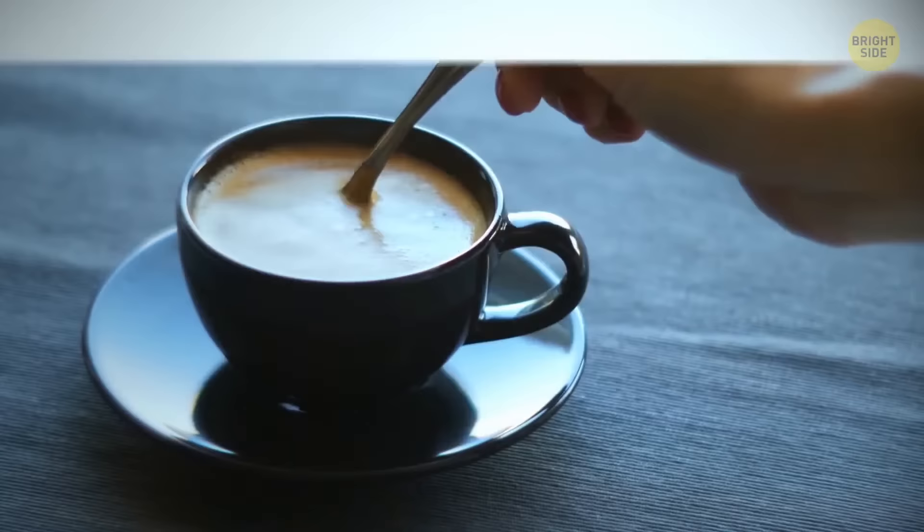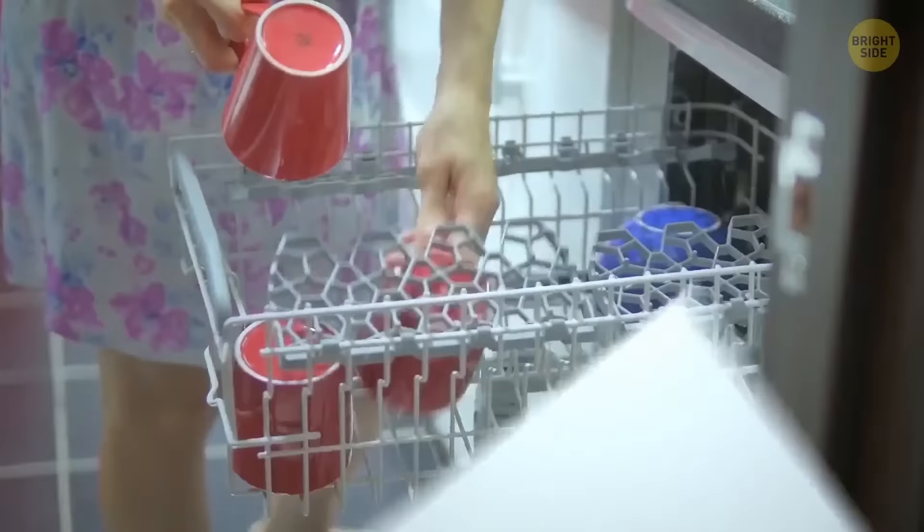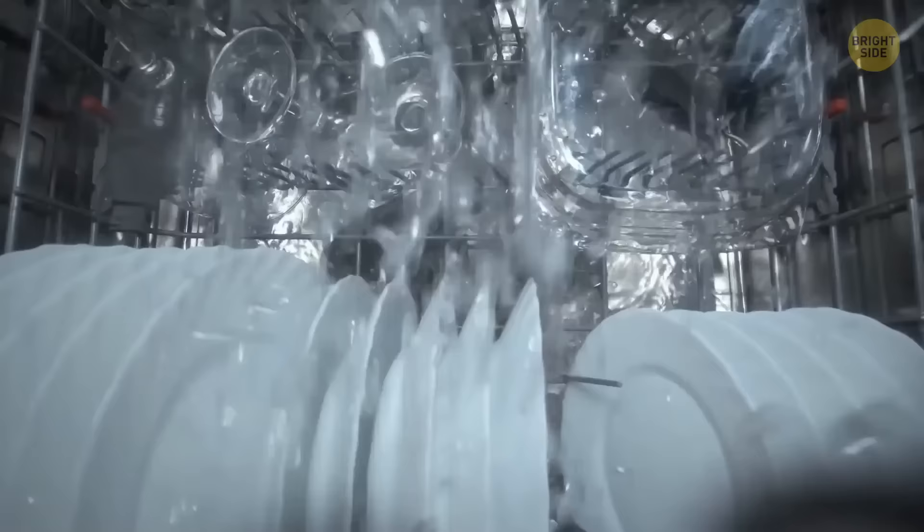Now, some cups look like they're chipped on the bottom, but they're produced this way. In fact, these dimples are supposed to keep the cup in place on wet surfaces, and it doesn't let excess water accumulate while it's in a dishwasher.